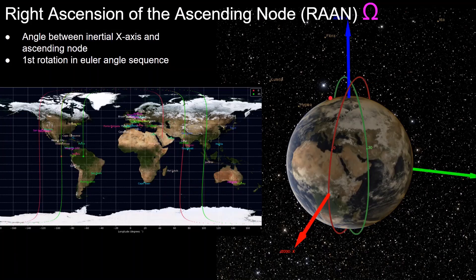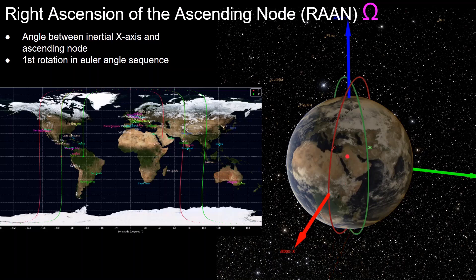Next up is the right ascension of the ascending node (RAAN), sometimes called the longitude of the ascending node. It is defined as the angle between the inertial x-axis — the red vector — and the ascending node, where the ascending node is the point in the orbit where the spacecraft comes up through the equatorial plane, or where the z-component of position crosses from negative to positive. The red plot has zero RAAN since that crossing point is right on the x-axis, and the green orbit has a 30-degree RAAN since that point is 30 degrees from the x-axis.